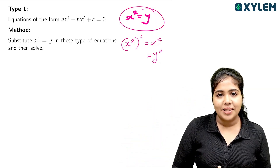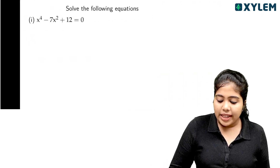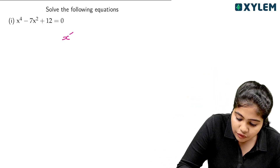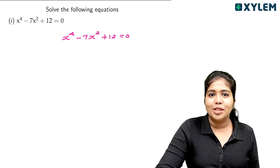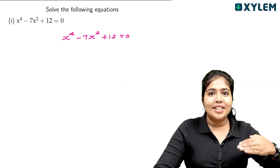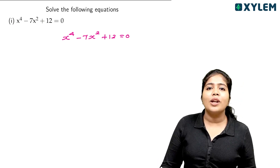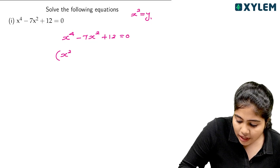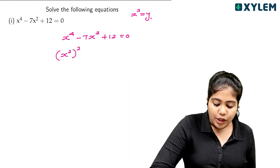If you want to solve the following equations, here we have the first question. Solve the following equation: x raised to 4 minus 7x squared plus 12 is equal to 0. We have a confusion about this raised to 4. If you want to do x raised to 4, x squared the whole square is the same meaning, because 2 into 2 is 4. If you make power to power, this will be the multiplication.